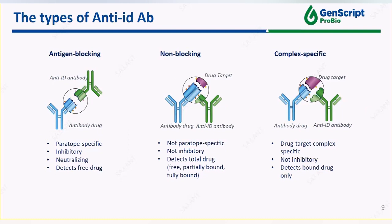When the anti-ID binds to the drug through the CDR region, it will compete against the drug target and only binds to free drug. If the anti-ID binds to the drug through the neighboring region of the CDR, meaning the framework of the variable region, it won't compete against the drug target and as a result it can recognize both bound drug and free drug. If an anti-ID only binds to the drug-target complex, it will only recognize bound drug.